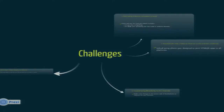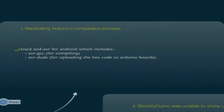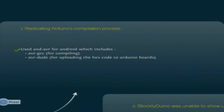There were various challenges we faced. The first was replicating Arduino's compilation process. We had to find out how Arduino compiles its code. We used andAVR, which contains AVRGCC and AVRDUDE. AVRGCC is used for compiling the code and AVRDUDE is used to upload the final compiled code onto the Arduino device. We used andAVR for the Android implementation.